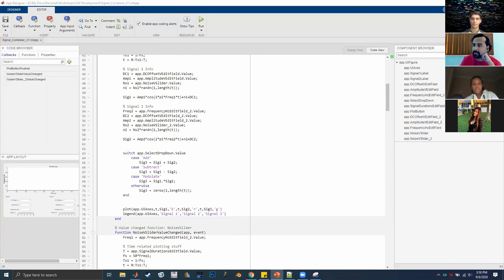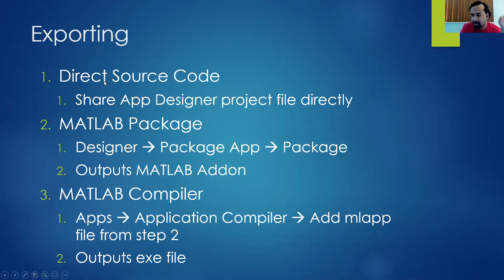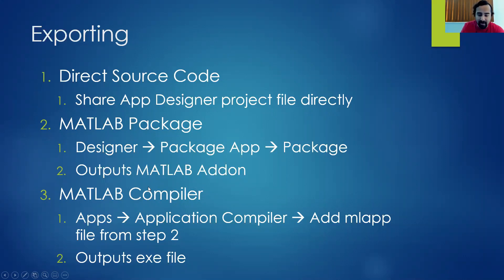There's only one thing left: exporting. You have your app designed and you're ready to share it. The first way is just direct source code — send them the MLAPP file so they can see all the components and code, useful for collaboration. But if you just want to share functionality, in App Designer you can package the app as a MATLAB add-on, or you can save it as an M file, which converts everything into a single runnable script that works just the same but outside of App Designer.